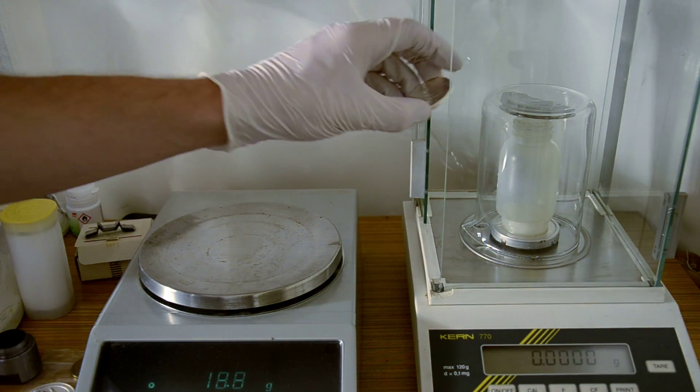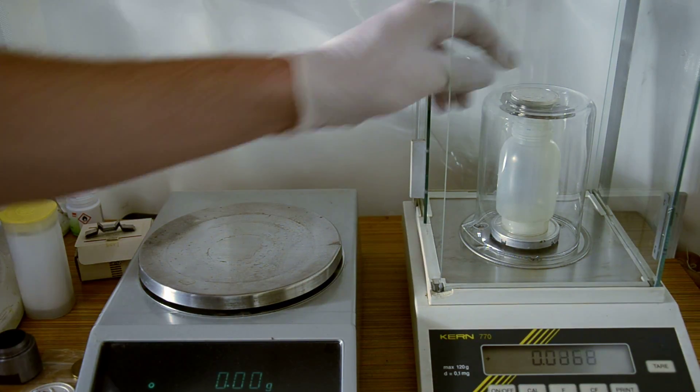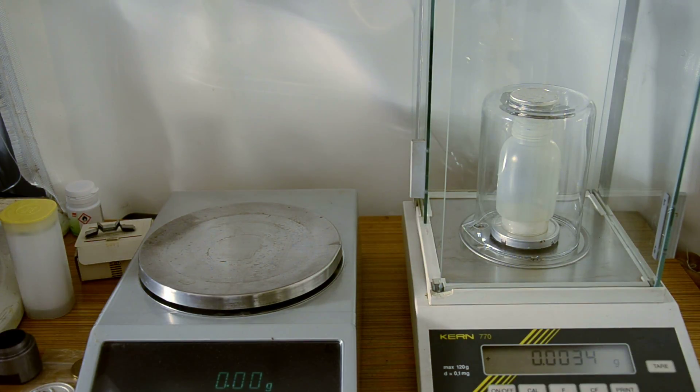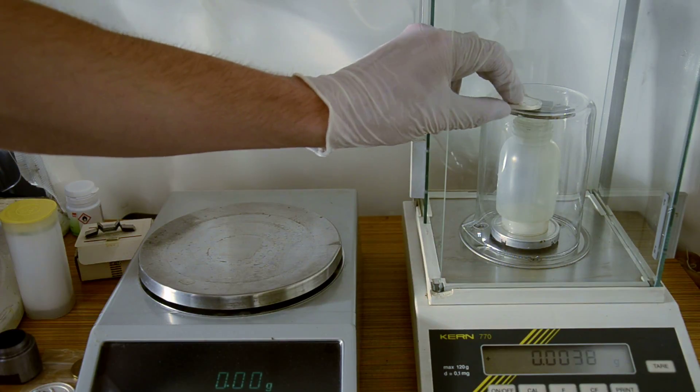So just put the Maple Leaf on the scale, and you see three and a half milligrams of weight, so it's diamagnetic as expected for pure silver.